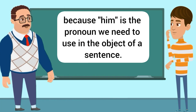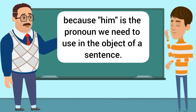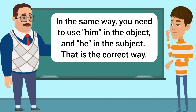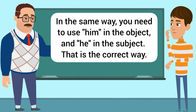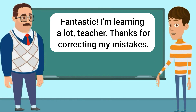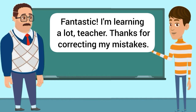Because 'him' is the pronoun we need to use in the object of a sentence. In the same way, you need to use 'him' in the object and 'he' in the subject. That is the correct way. Fantastic. I'm learning a lot, teacher. Thanks for correcting my mistakes.